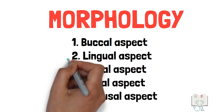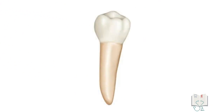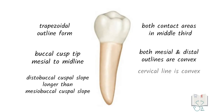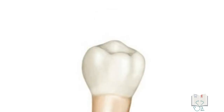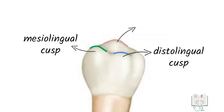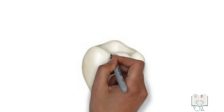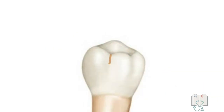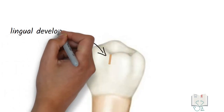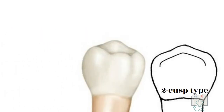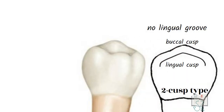Next, the lingual aspect. The features of the outline form from the buccal aspect are the same in the lingual aspect as well. Additionally, all three cusps are seen: the mesolingual cusp, distolingual cusp, and buccal cusp. The buccal cusp is the largest and the distolingual cusp is the smallest. A small groove running vertically between the two lingual cusps is called the lingual developmental groove. In the two-cusp type, there are only two cusps — one lingual cusp and one buccal cusp. The lingual cusp is smaller than the buccal cusp, and there is no lingual developmental groove.